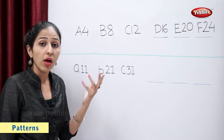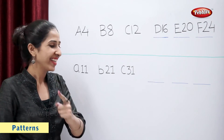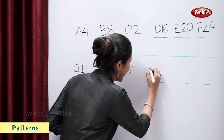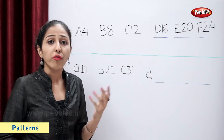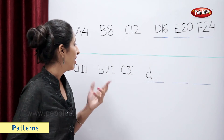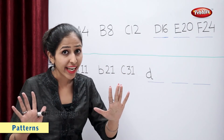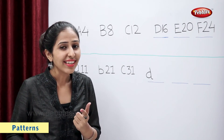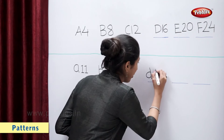So, tell me students, which is the next letter? Correct! Letter D. So, which is the next number? 31 plus 10 — count? Correct! Number 41.